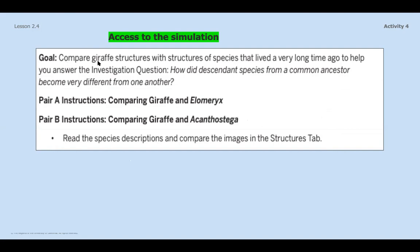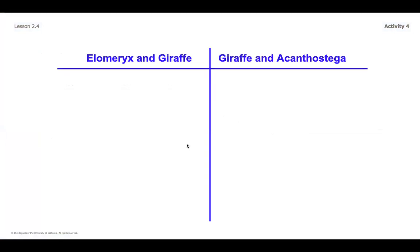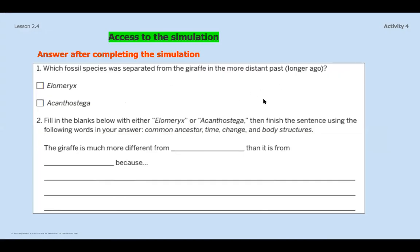Our goal here is to zoom in on the giraffe and think about which descendant species are most similar to each other. You're going to want to read some of the descriptions and look at some of the structures, because we know that structural similarities help us understand the relationship between two different species. If you're doing that independently, get this jotted down and open up the sim. After completing the sim and taking notes in your T-chart, there are just two wrap-up questions and then you can skip to the end of this video for a reflection.